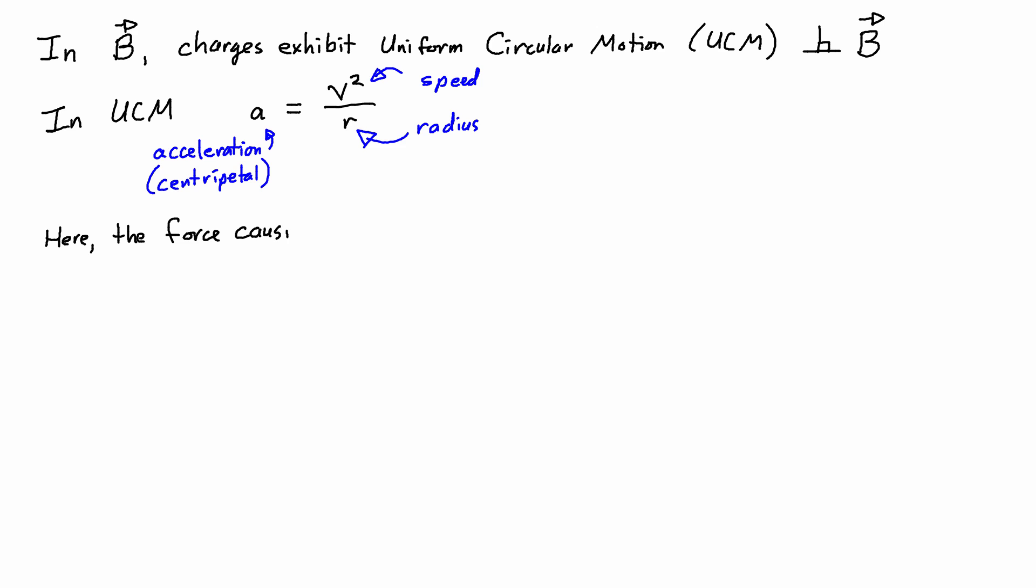Here the force causing uniform circular motion is the magnetic force, Fb equals qvB sin theta, where theta is 90 degrees, so sin theta becomes 1. From Newton's second law we have net force equals mass times acceleration. I can work in terms of force magnitude and magnitude of acceleration because this is the only force acting, and centripetal just means towards the center of the turn. So I substitute in, the net force is Fb, so I write qvB, and sin of 90 degrees gives 1, equals mass times the centripetal acceleration, so I substitute v squared over r.